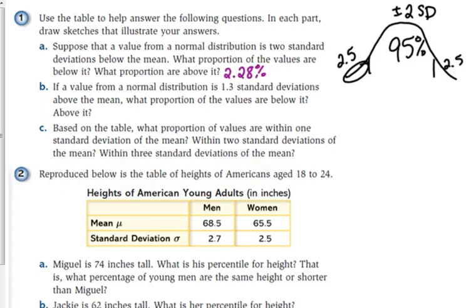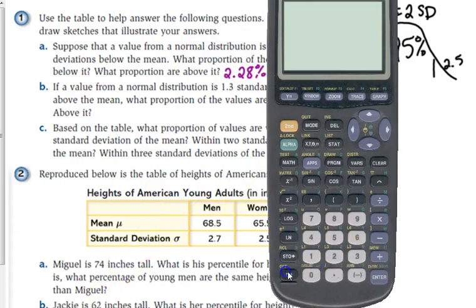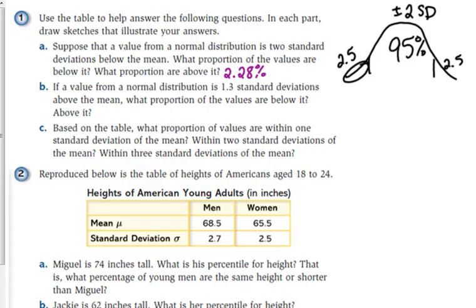So 2.28% are below. So what proportion are above it? What do we need to do? Subtract that from 100, or we could take the proportion number and subtract it from 1, either way. 97.72% are above it.